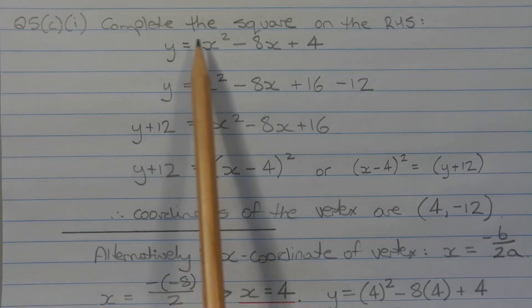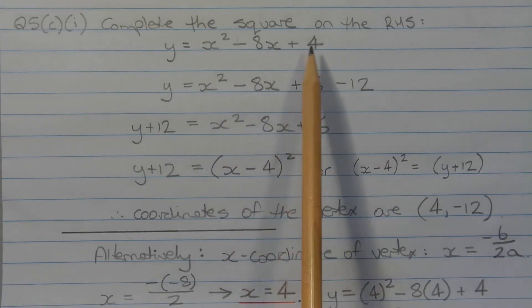The first step is to complete the square on the right hand side. That is, completing the square on x squared minus 8x plus 4.